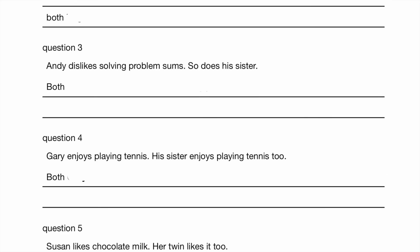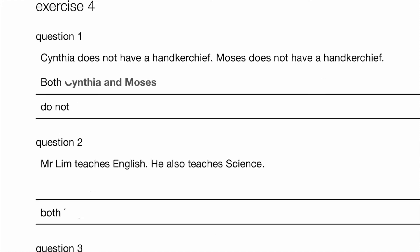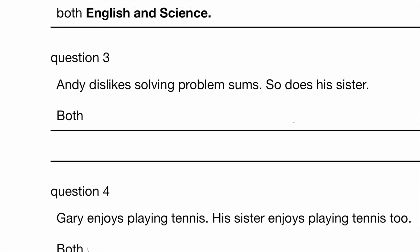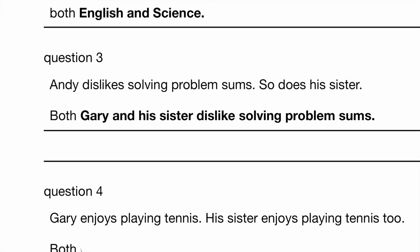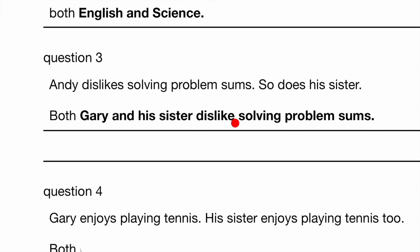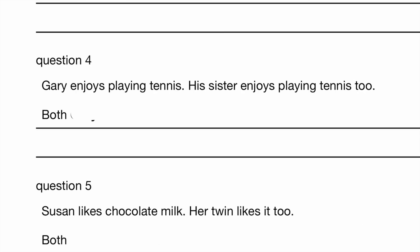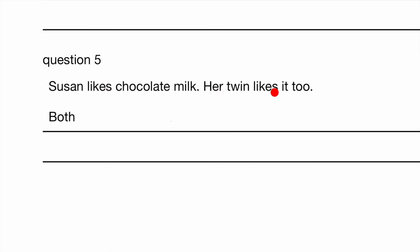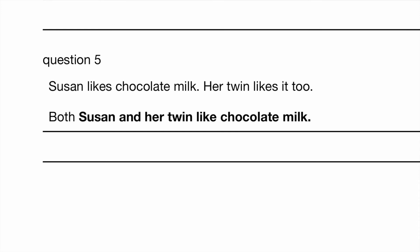Exercise 4: Dealing with both Cynthia and Moses — both Cynthia and Moses do not have handkerchiefs, with S. Mr. Lim teaches both English and science. Both Andy and his sister dislike solving problem sums — make sure there's no S because both is plural: dislike, plural form. Gary and his sister — both Gary and his sister enjoy playing tennis — enjoy without S. Susan likes with S, her twin likes, but when using 'both': both Susan and her twin like chocolate milk.